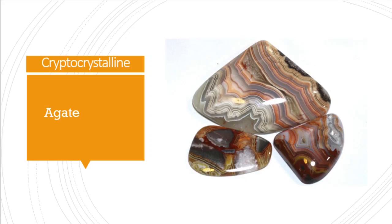We will now move to the cryptocrystalline materials. The first one under cryptocrystalline is agate — one of the most beautiful types of gemstone in the quartz family. It has different beautiful patterns in the gemstones, as you can see here.